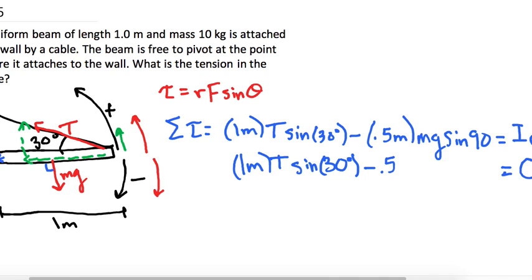minus 0.5 meters, times mg. And I'm going to leave sine of 90 out because it's just one. All right, so now we just need to solve for T. That's what we want to find.